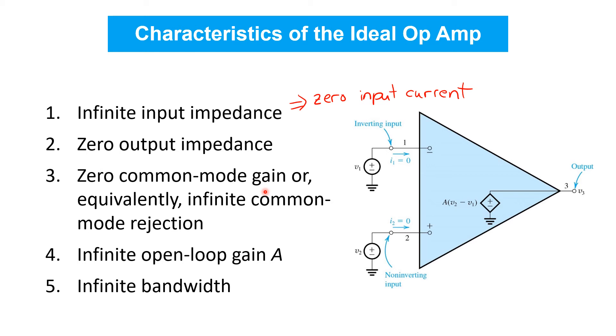Fourth, we've said that the amplifier's open loop gain A is ideally infinite. And finally, the ideal op amp is assumed to have that infinite gain over an infinite bandwidth, that is at all frequencies.